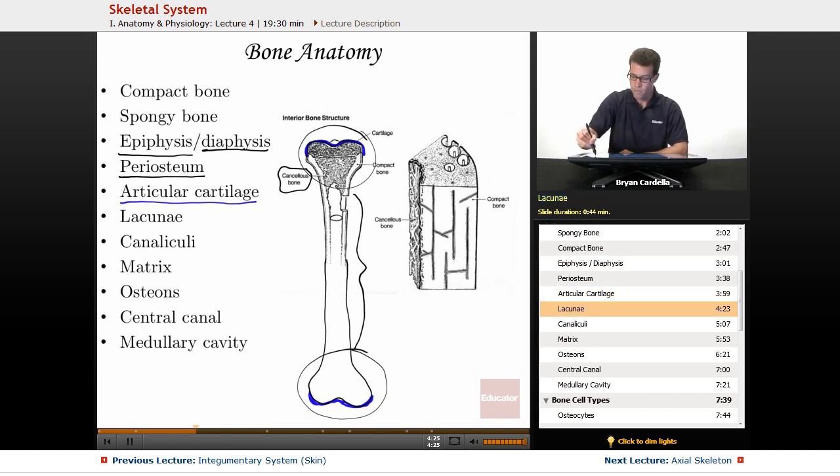Lacunae. If we zoom in really, really, really close to what's going on in here, a lacuna is going to be a home for a bone cell, also called an osteocyte. So here's an osteocyte with its nucleus. The red is that chamber deep within the matrix of the bone or the hard parts of the bone where you're going to have bone cells.